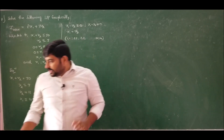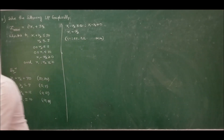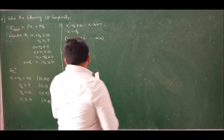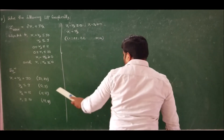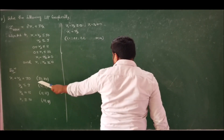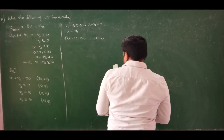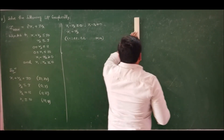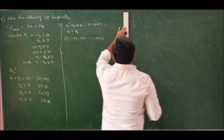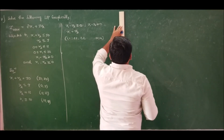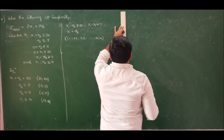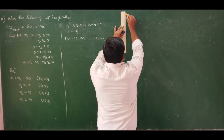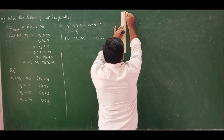To construct the graph, the highest values of x and y we have are 30 and 30. So I will use a scale of 1 centimeter = 2 units for both axes.